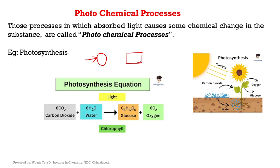In photosynthesis, carbon dioxide and water in the presence of light and chlorophyll get converted to glucose and oxygen. Six carbon dioxide molecules and six water molecules in the presence of light are converted to one glucose unit and six molecules of oxygen. Carbon dioxide is a gas, water is a liquid, and these two combine to form a different molecule — glucose. There is a chemical change happening in the presence of light, so such processes are called photochemical processes.